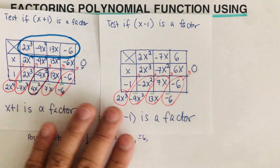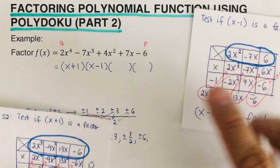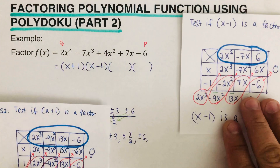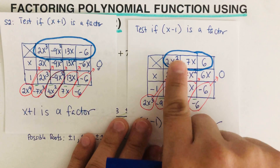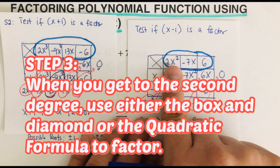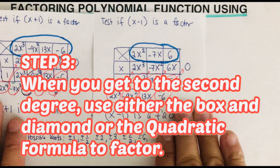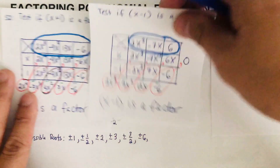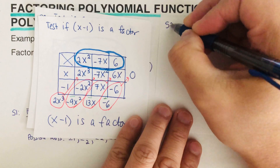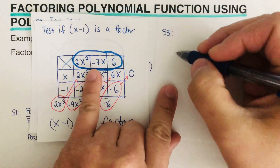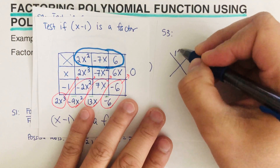For step three, when you get to the second degree, use either box and diamond or the quadratic equation to factor it out. I'll show the work using box and diamond. We use the diamond first. On the diamond we write the product between the first and the last term, which is 12x squared, and the middle term is negative 7x.